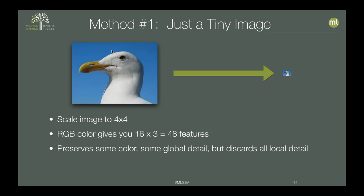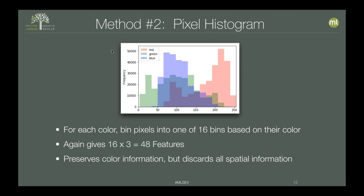Another common approach in the vision world is pixel histograms. For each channel — red, green, blue — you make 16 bins and count pixels into those bins depending on their color value. You get the color information at a fairly high level of detail. I can tell you about the color of an image in a general but specific way. However, you've discarded all of the spatial information. So if spatial information is important to your problem, you don't have it if you featurize your image this way.